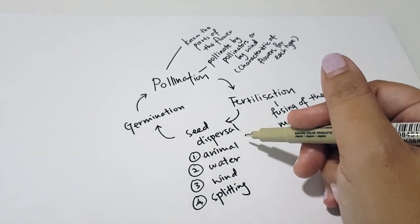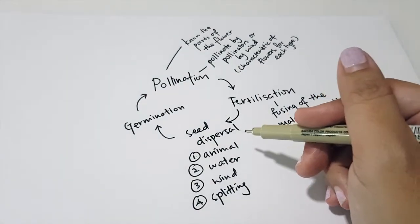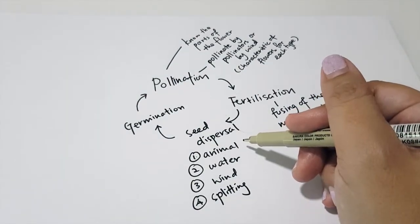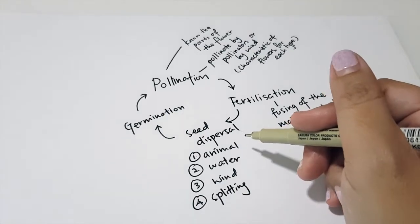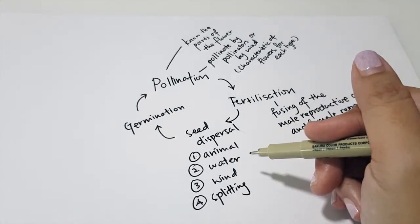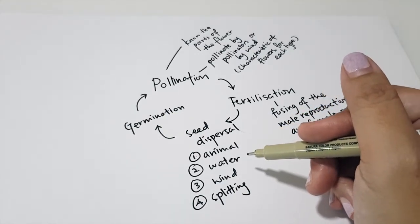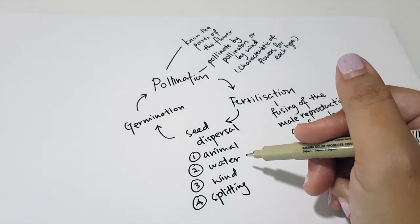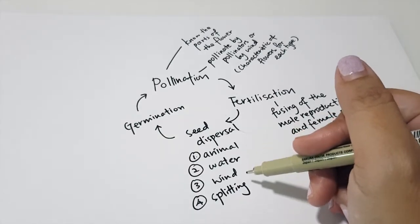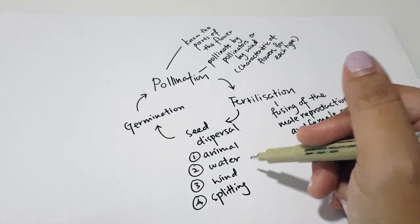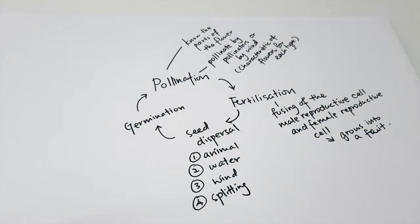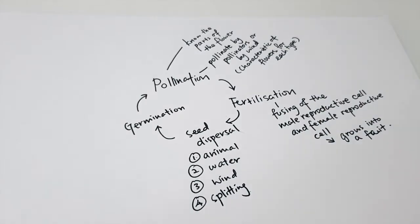By animals, there are three ways: fruits are eaten and seeds are thrown away or passed out in droppings, or hooks on seeds catch onto fur. By water, seeds have a fibrous husk and waterproof covering to float. By wind, there may be a wing-like structure. By splitting, when ripe the pod splits open and seeds burst out.